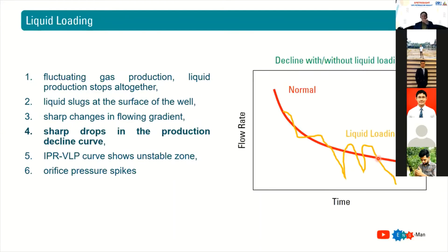Also, if you have sharp drops in the production decline curve, it means you have liquid loading. The normal decline should be a smooth trend, but your production becomes erratic — going up and down repeatedly, then ultimately dropping. This is also a symptom of liquid loading in a gas well.